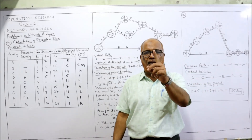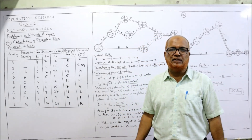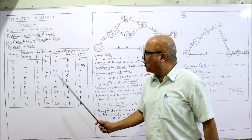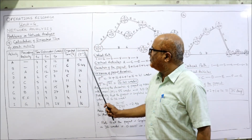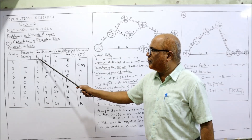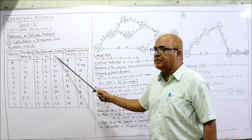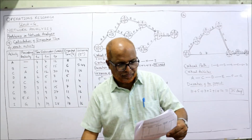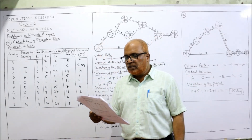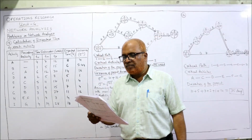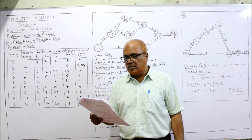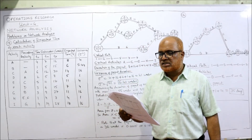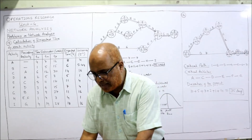We are given time estimates in weeks: optimistic, most likely, and pessimistic. We combine these three times into one expected time TE. The formula for TE is: TE = (TO + 4TM + TP) / 6. The two questions are: first, draw the network diagram and find the critical path; second, find the probability that the project is completed in 36 weeks.